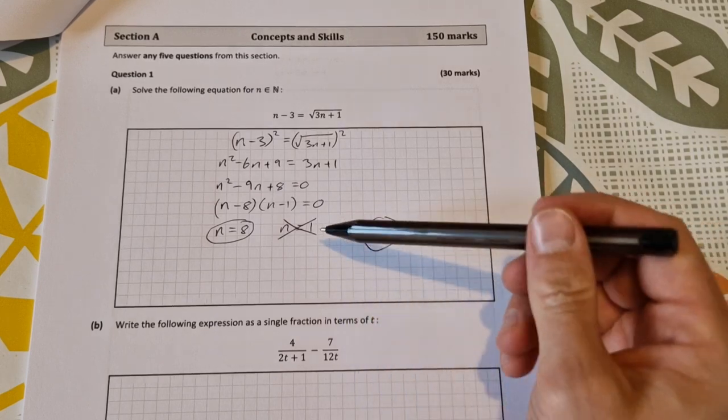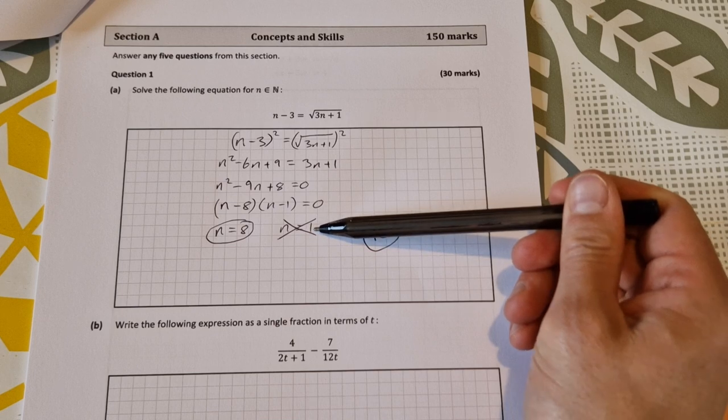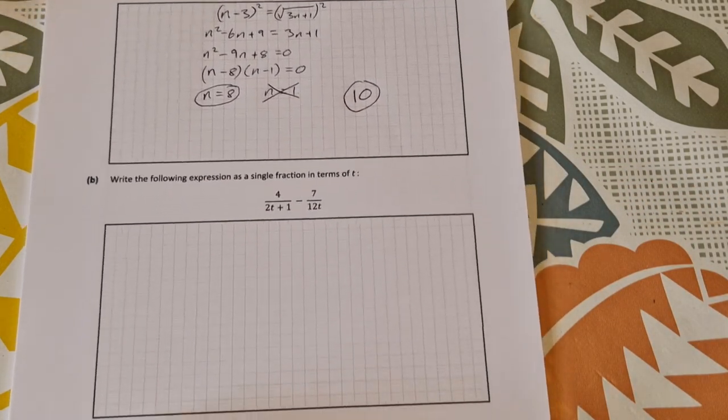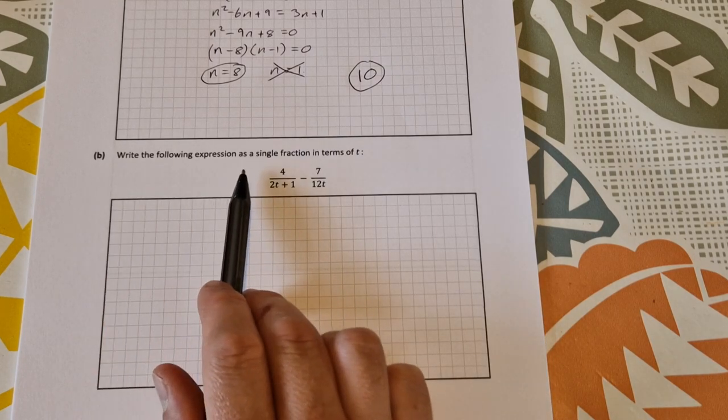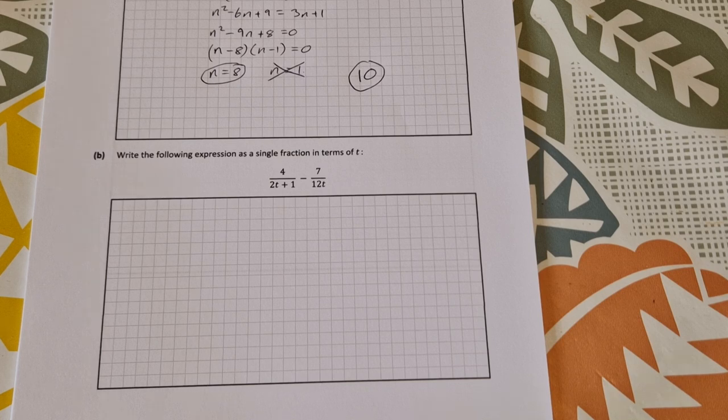You get 9 out of 10 if you don't do that last step. If you don't sub in and figure out that n equal to 1 doesn't work you only get 9 out of 10. Part 2 or part B write the following expression as a single fraction in terms of t so we've got to get a common denominator and write it as a single fraction.